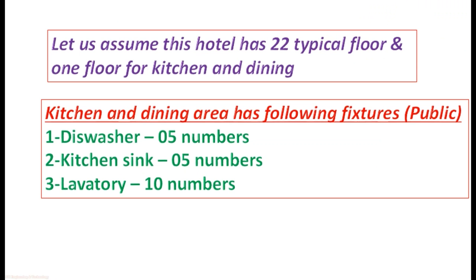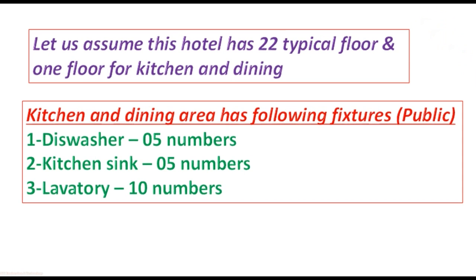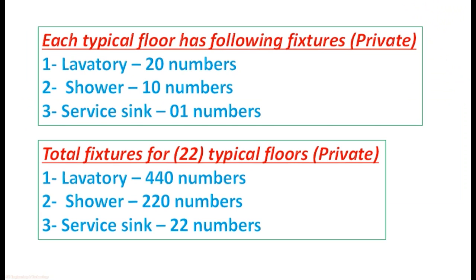For our study, let us assume this hotel has 22 typical floors and one floor for kitchen and dining. The kitchen and dining area has the following public fixtures: dishwasher 5 numbers, kitchen sink 5 numbers, lavatory or washbasin 10 numbers. Each typical floor has the following private fixtures: lavatory/washbasin 20 numbers, shower 10 numbers, and service sink 1 number. Total fixtures for 22 typical floors will be washbasin 440 numbers, shower 220 numbers, and service sink 22 numbers.